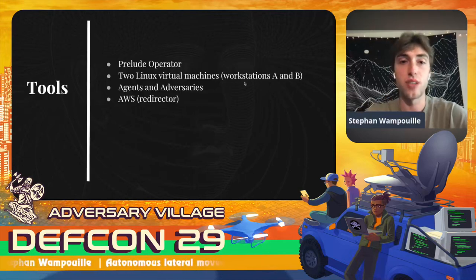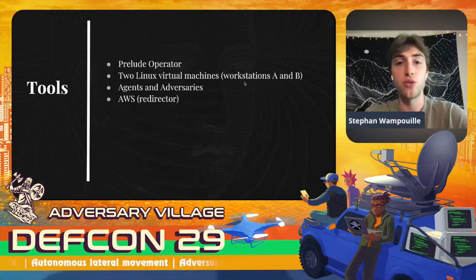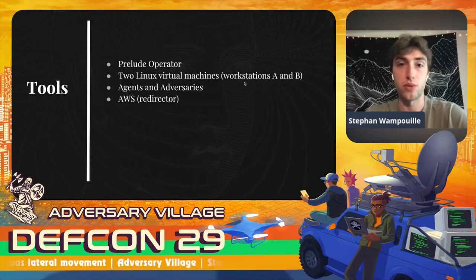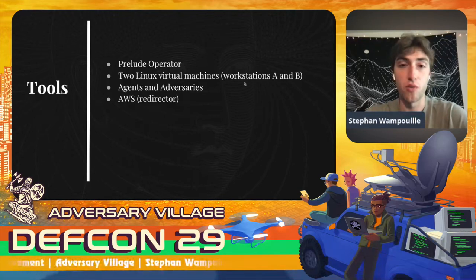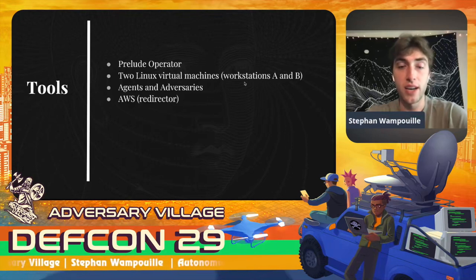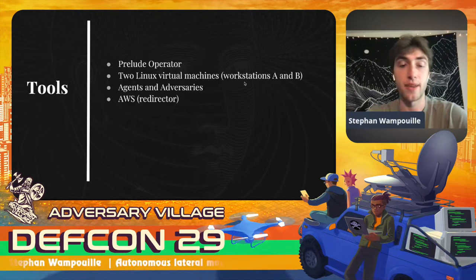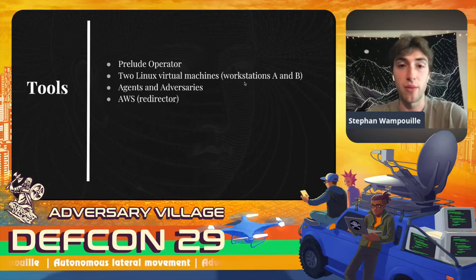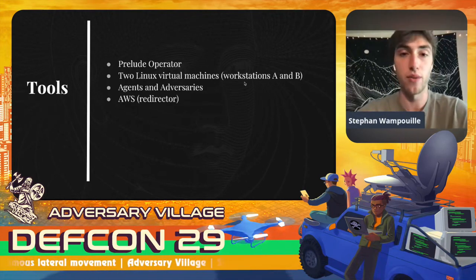The tools I'll be using: Prelude's Operator, which is a command and control center; two Linux virtual machines labeled as workstations A and B; and agents and adversaries. Agents are remote access Trojans that I will upload and have connect back to me. Adversaries are a culmination of TTPs which I will use in my attack. Finally, we have AWS, which will be used as a redirector, allowing me to have connections to workstations A and B and proxy back to my local laptop.